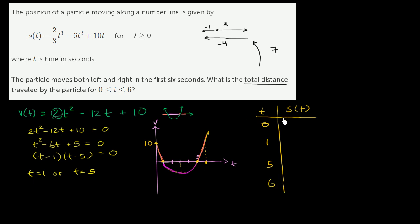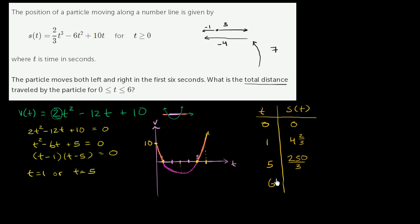At t = 0: s(0) = 0. At t = 1: s(1) = 2/3 - 6 + 10 = 4⅔. At t = 5: the first term is (2/3)(125) = 250/3 = 83⅓.